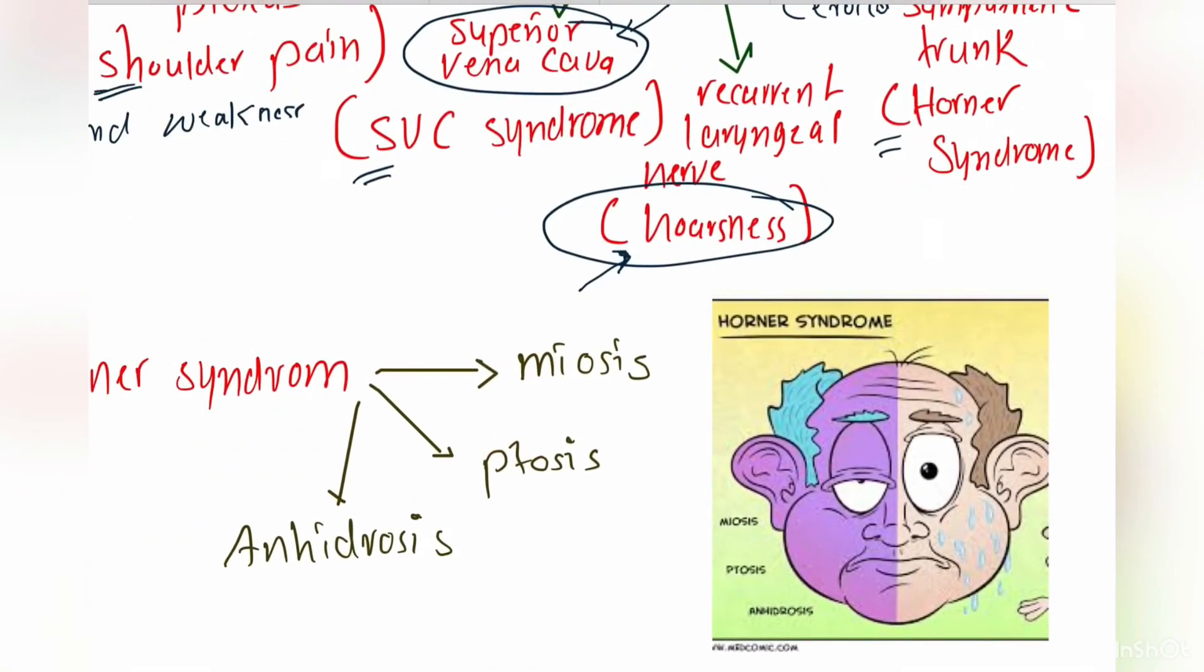Horner syndrome results from a pulmonary lesion located in the apex of the lung causing compression of the cervical sympathetic trunk, resulting in ptosis (dropping of the eyelid), miosis (narrowing of the pupil), and anhidrosis (ipsilateral loss of sweating).